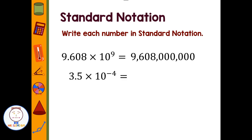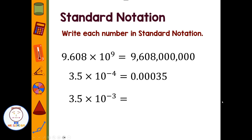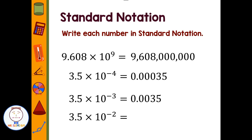How about 3.5 times 10 to the negative four? I need to move the decimal in the opposite direction. Remember, a negative exponent means a very small number. It's going to take one place to get past the three, and then I need three more zeros — 0.00035. And 3.5 times 10 to the negative three: moving the decimal to the left gives 0.0035. And 3.5 times 10 to the negative two gives 0.035. We see a pattern: as we decrease the negative exponent, the number of decimal places gets smaller by one.